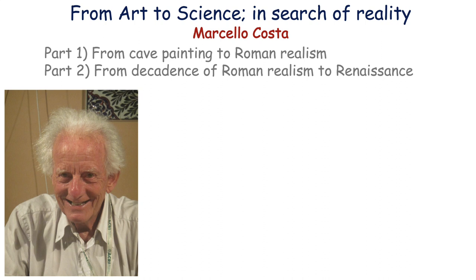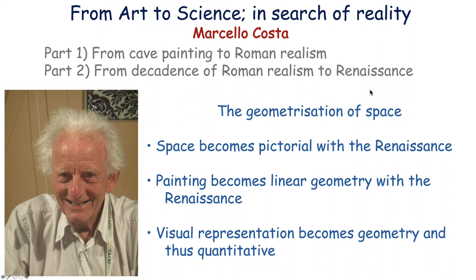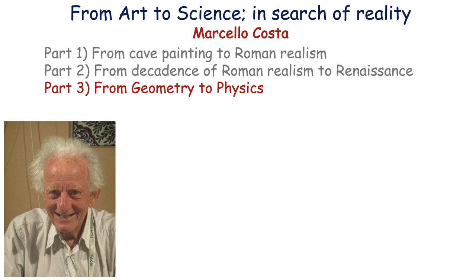The role of painting in the history of humankind. I started in the first part from cave painting to Roman realism, and in the second part from the decadence of Roman realism during Christianity all the way back to the Renaissance. In this talk today, I'm going to talk about the geometry of space — how space became pictorial with the Renaissance, painting became linear geometry, and visual representation became geometry and thus quantitative, with consequences for science. Today I'll cover Part 3: a period going from geometry to the birth of physics.